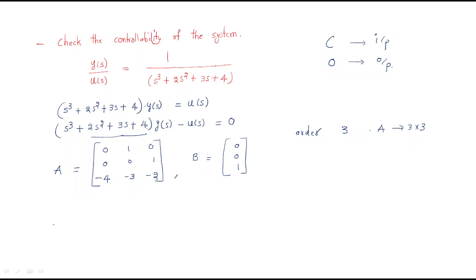To make the controllability matrix QC, it is nothing but [B, AB, A²B]. For that, first we should find out AB and A²B.